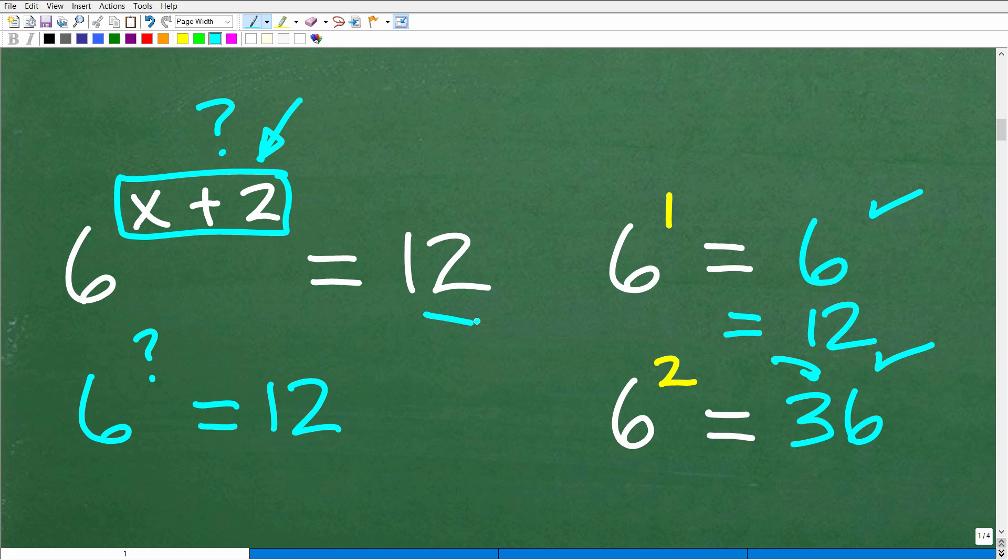We're trying to get 12 here, right? Well, our power, whatever it is, has to be less than 2, okay? So, but now, does it have to be more than 1? Well, 6 to the first is only 6. We want to get to 12.